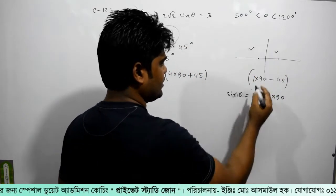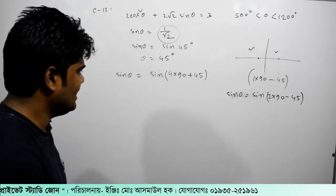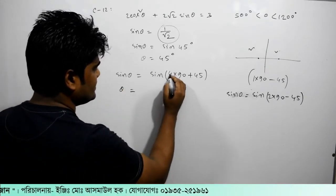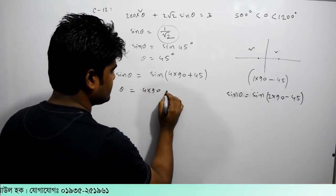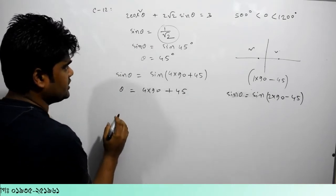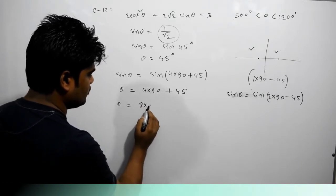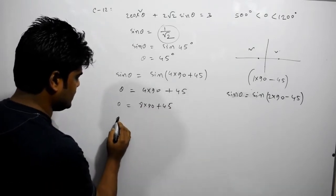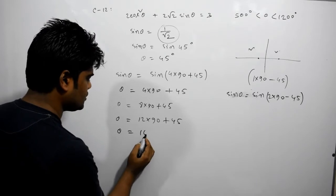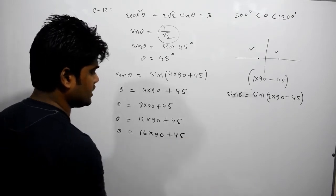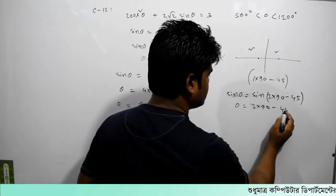Now, minus is equal to minus 45 degrees. Now, if you want to say that — let's say that theta is equal to... How much is it? 4×90 plus 45. Theta is equal to 8×90 plus 45. Theta is equal to 2×90 plus 45. Theta is equal to 6×90 plus 45. Theta is equal to 2×90 minus 45.